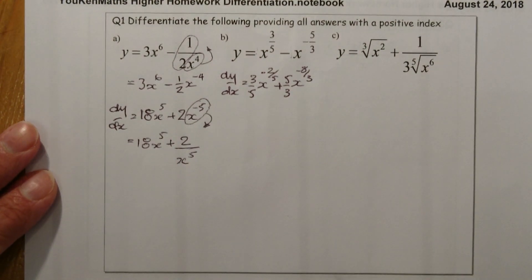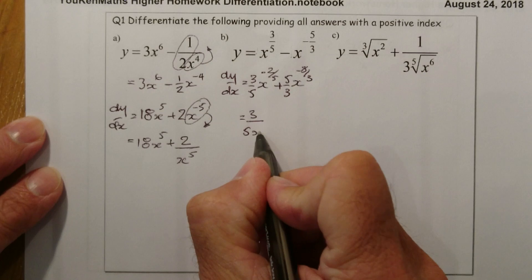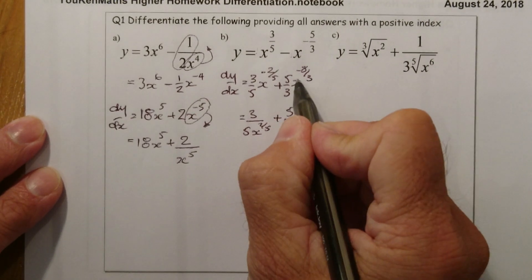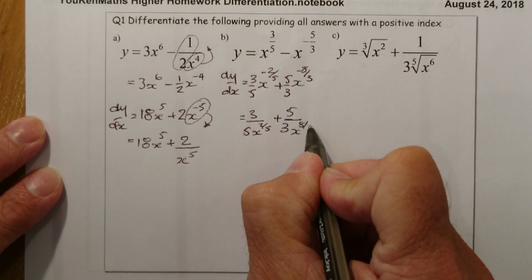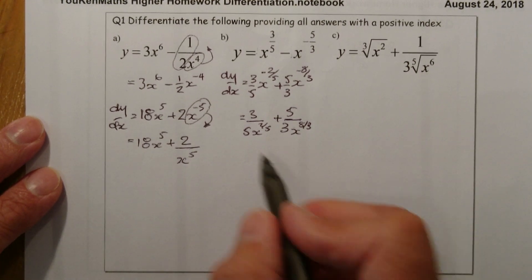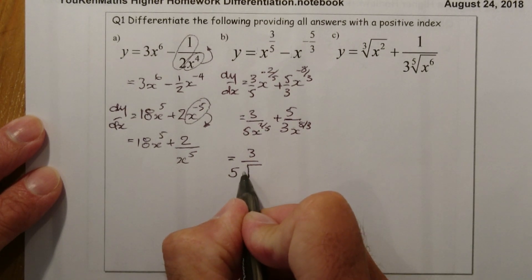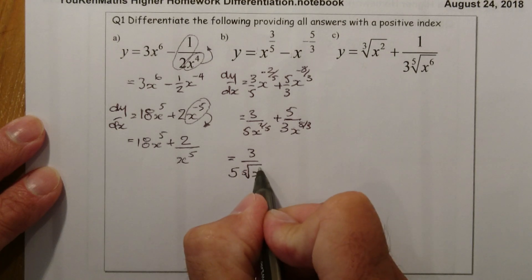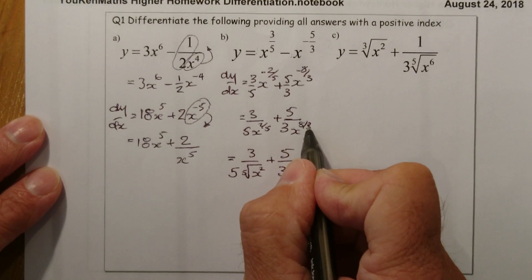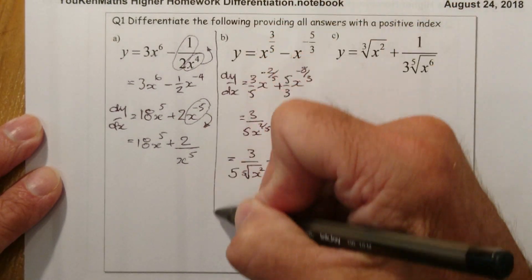Taking 3 away from minus 5 gives minus 8, so that'll be x to the minus 8, dealing with thirds so 3 on the bottom. Writing with a positive index: three-fifths, x goes to the bottom, that's 2 over 5 positive. Then I have plus five-thirds, with x to the minus 8 over 3, which becomes x to the 8 over 3 with a positive index. Converting back to root form if needed: that's a 5th root of x squared over 5, plus the cube root of x to the 8.